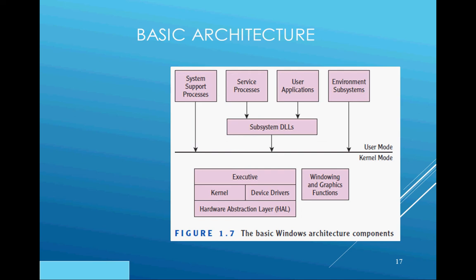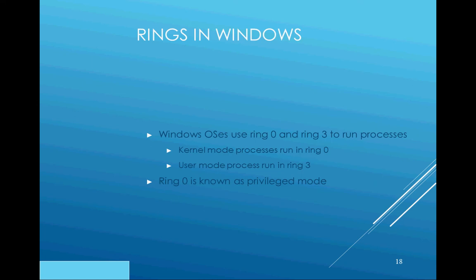This separation corresponds to Ring 0 and Ring 3. Ring 0 is the kernel mode — a lower level that provides direct access to the hardware. We want to prevent applications and users from getting there, so they are placed in Ring 3 to keep them away.